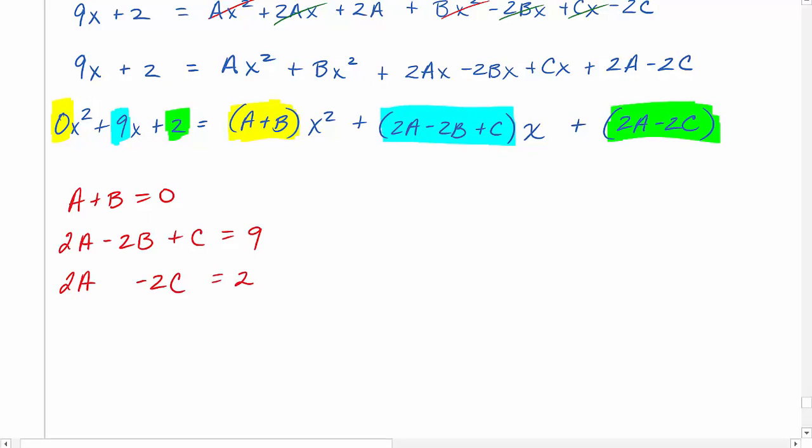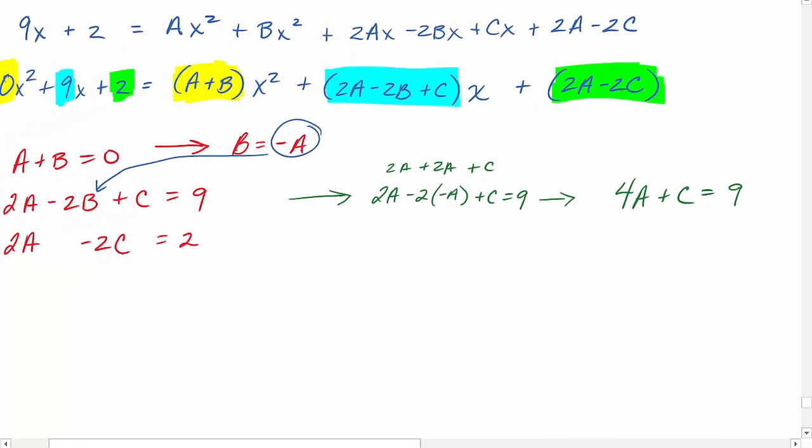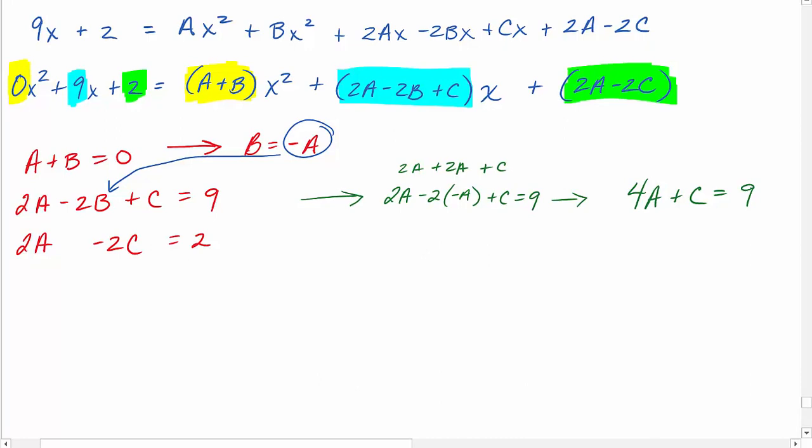I'm going to use substitution. So this first equation, I actually want to solve for b. So b is equal to negative a. So now I'm going to take this negative a and plug it in there for b. That's going to give me 2a minus 2 times negative a plus c equals 9. So this is going to be 2a plus 2a plus c, so that's going to turn into 4a plus c equals 9. And then I'm going to solve that 4a plus c equals 9 with my third equation right here.